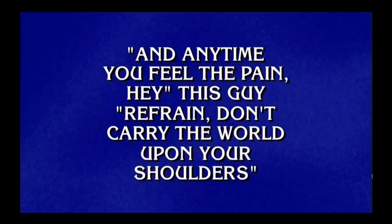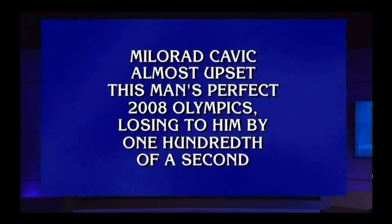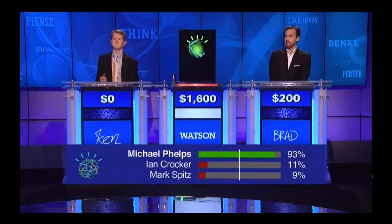IBM actually did put Watson into a game of Jeopardy, and it played against two very famous Jeopardy champions, Brad Rutter and Ken Jennings. [Jeopardy clip]: 'Beatles people for $200.' 'And anytime you feel the pain, hey, this guy, refrain, don't carry the world upon your shoulders.' Watson: 'Who is Jude?' Correct. 'Olympic oddities for $200.' 'Milorad Kavic almost upset this man's perfect 2008 Olympics, losing to him by one hundredth of a second.' Watson: 'Who is Michael Phelps?' Correct. Now, if a machine can play Jeopardy, that also means it could probably understand you — and understand that legal document you need to sign, and every article written in a medical journal over the last year, and then give that information back to doctors when they ask questions about a patient's symptoms. It's a system that has a lot of potential and a great example of a new way we can interact with machines using natural language and our voice.